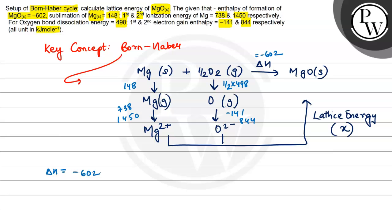So minus 602 will be equal to the sum of all energies, right? So let's see, we will start with Mg solid to gas 148 plus 738 plus 1450. And then we will add half of 498 minus 141 plus 844.